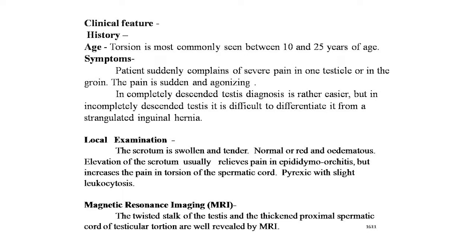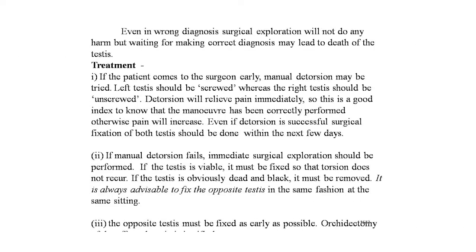MRI is used for diagnosis: the twisted stalk of the testis and thickened proximal spermatic cord of testicular torsion are well revealed by MRI. In distinguishing torsion from epididymitis and orchitis, MRI is preferred over ultrasonography, as the latter requires manipulation of the scrotum which is extremely painful. Even with a wrong diagnosis, surgical exploration does no harm, but waiting for a correct diagnosis may lead to death of the testis.